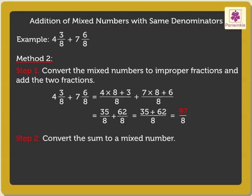We have to convert 97/8 into a mixed fraction. We divide the numerator 97 by denominator 8, which gives us quotient 12 and remainder 1. Thus, we get the mixed number 12 and 1/8.